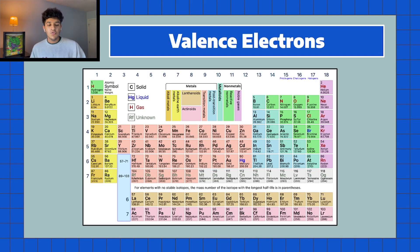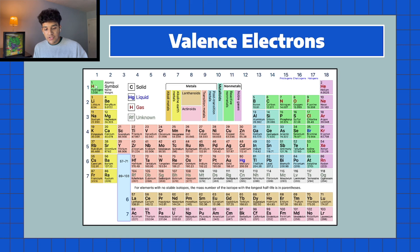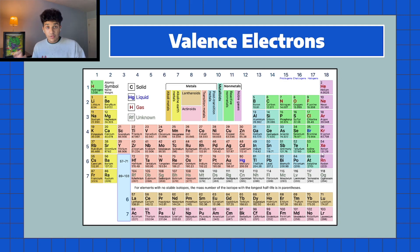Before I start the video I just wanted to go over the number of valence electrons each atom has, and this is a very easy trend we can tell by analyzing each column on the periodic table. The first column — hydrogen down — has one valence electron, the second column has two, then we skip the transition metals and go to column 13 which has three, and we just keep adding one — four, five, six — until we reach the noble gases which all have eight valence electrons.